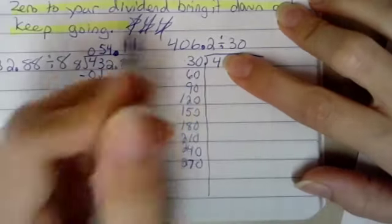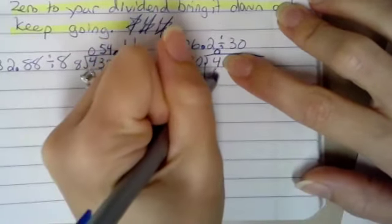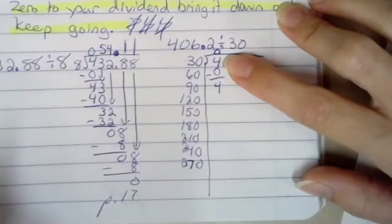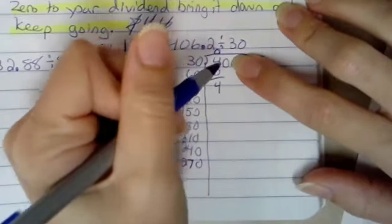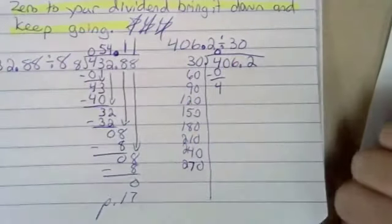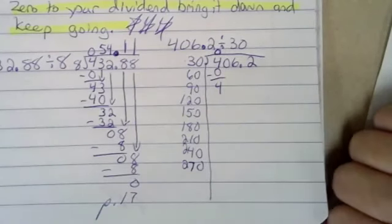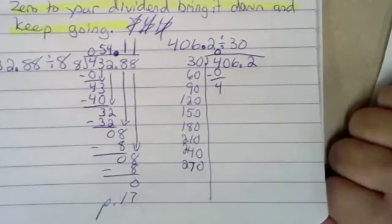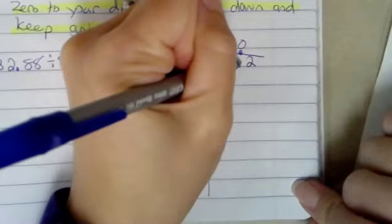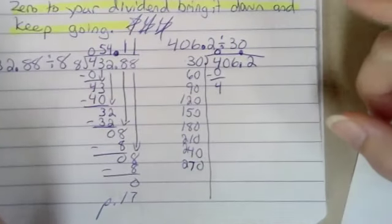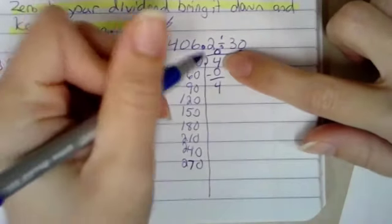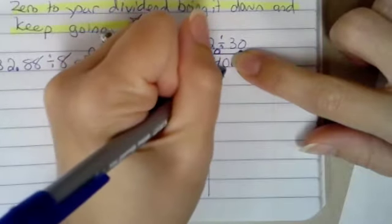Alright, 30 will not go into 4, so we put a 0. 0 times 30 is 0, we subtract and get 4. It is less, oops, I forgot step number 2. I wrote it using the division box, but step number 2 is, move it on up to the top. Okay, now I can ignore it.